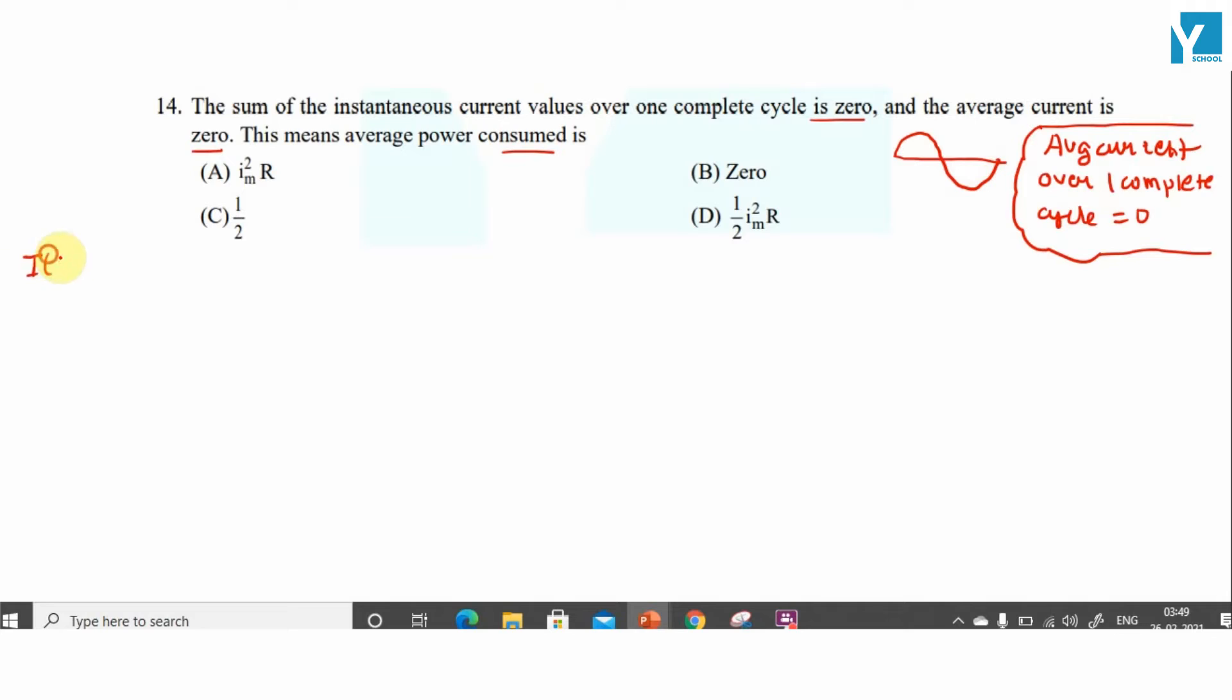Suppose I be the current at any instant time t, that is I₀ sin(ωt). Let R be the resistance of the circuit. So power delivered is equal to I²R, which is equal to I₀² sin²(ωt) × R.